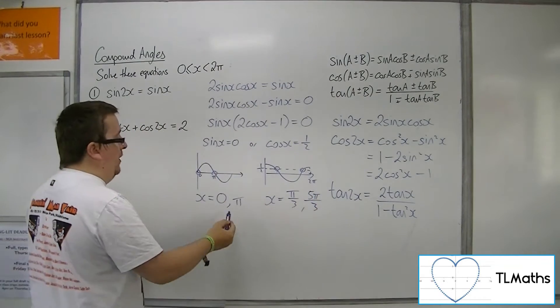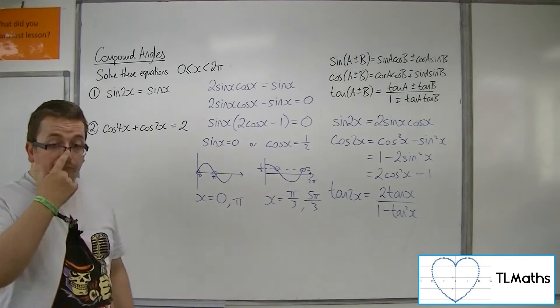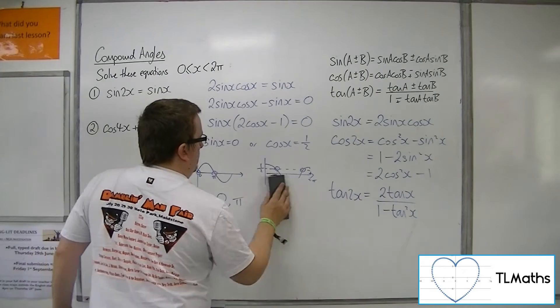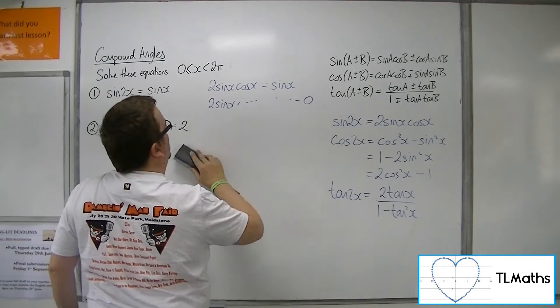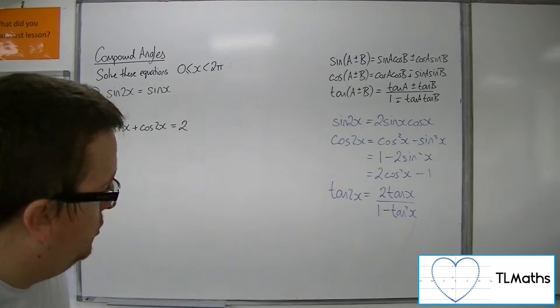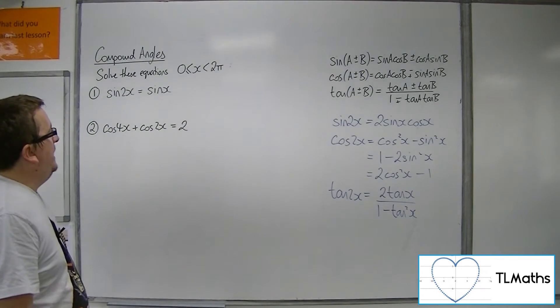So these are the four solutions to the original problem. So that's number one. So number two, we have cos of 4x plus cos of 2x equals 2.